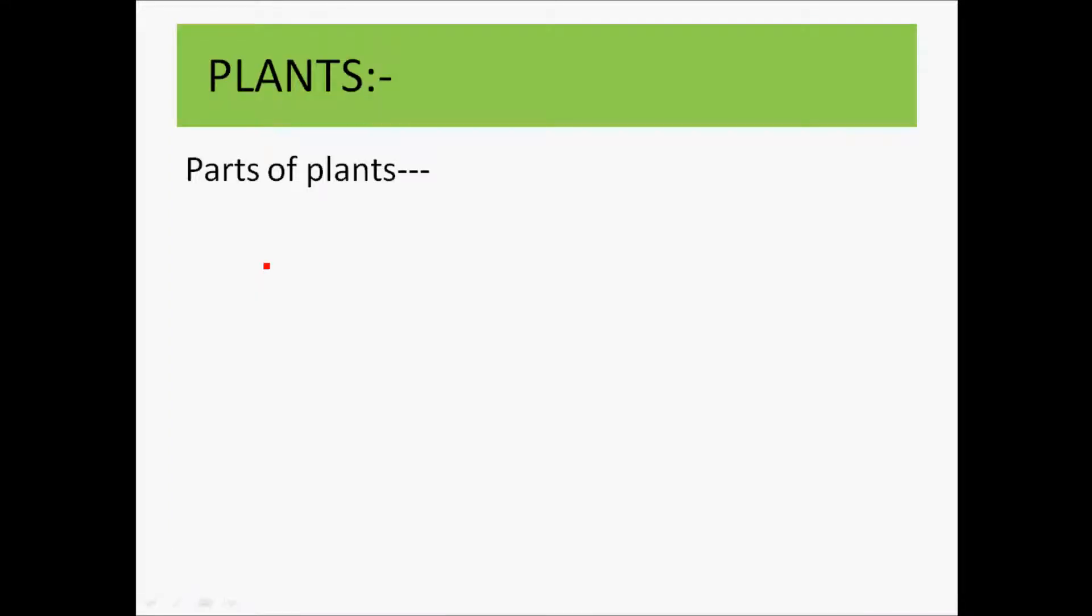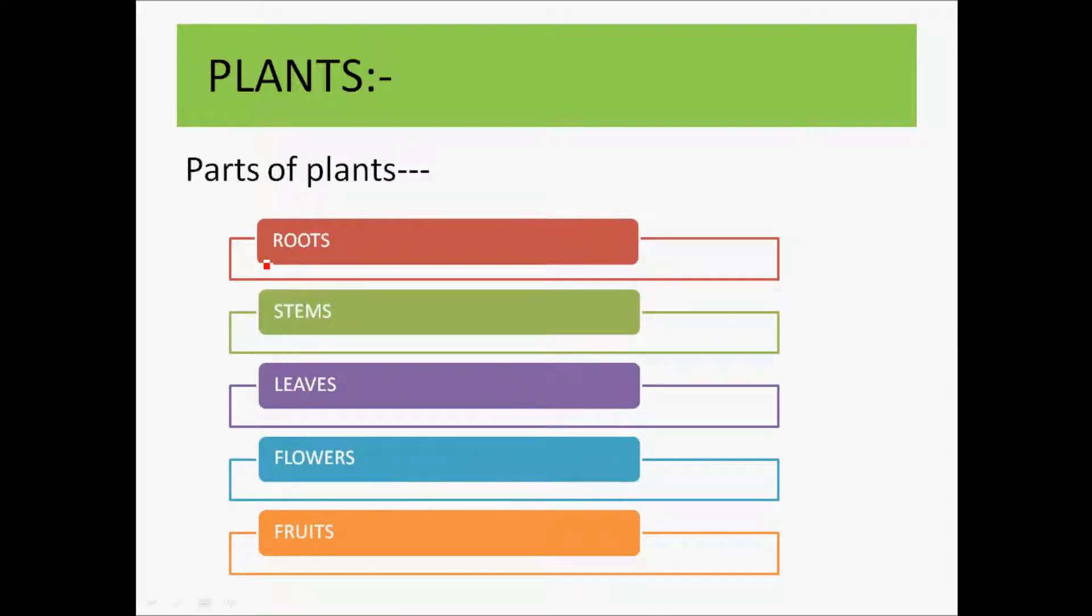Moving on, broadly we are classifying the plants into 5 categories: Roots, stem, leaves, flowers and fruits.